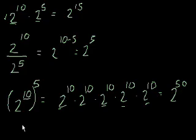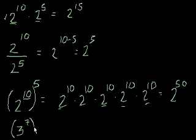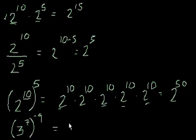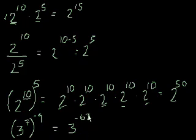Let me give you another example. If I said 3 to the 7, and all of that to the negative 9, all I do is multiply 7 and negative 9 to get 3 to the minus 63. As you can see, it works just as easily with negative numbers.